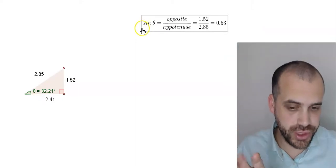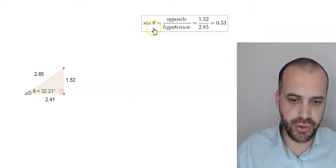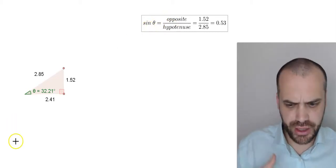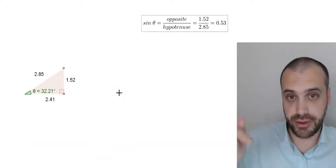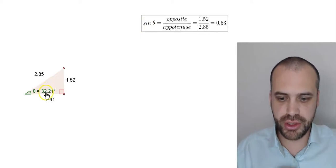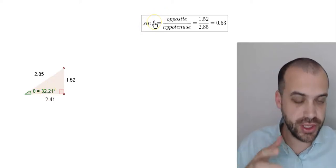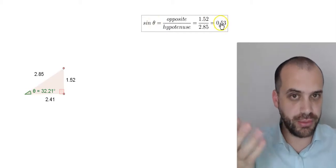Now the formula that we're interested in is this one: sine theta equals opposite over hypotenuse. Now what is this magical sine thing? Well if you look on your calculator it's a button. You can press sine. So you press sine 32.21, it will give you an answer of 0.53.